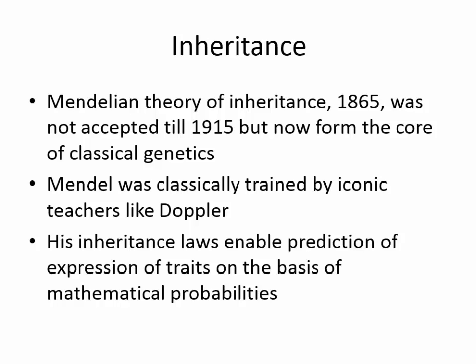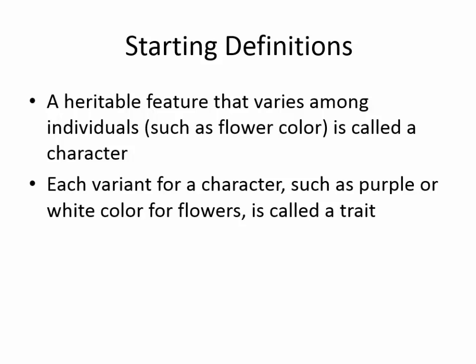That's the beauty of the whole thing. But first, we have to have some definitions. So we start out with: what is a heritable feature? A heritable feature, as defined by Mendel, is something that varies among individuals, such as flower color — he was looking at a lot of flower color. And he called that a character. Each variant for that character, such as purple or white color for the flowers, is called a trait.